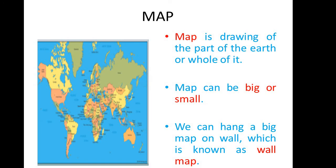So let's see what is a map. A map is a drawing of the part of the earth or whole of it. It shows us different places. A map can be big or small. We can hang a big map on a wall, which is known as a wall map.